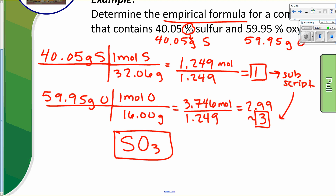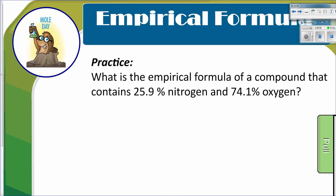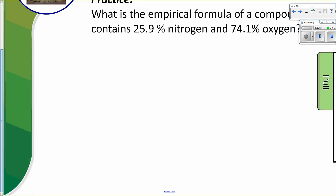Pretty easy. Let's do one where we actually don't have a whole number ratio at the end. Write the empirical formula of a compound that contains 25.9% nitrogen and 74.1% oxygen. Remember, if we assume a 100-gram sample, these percentages just become grams.